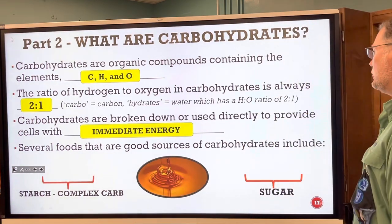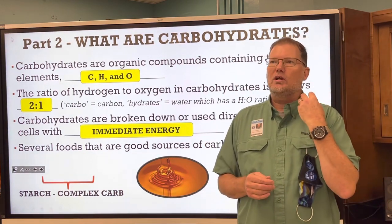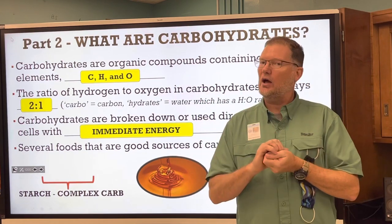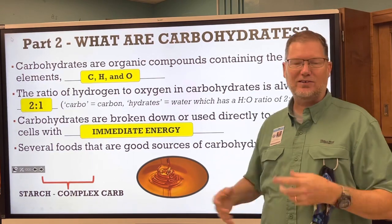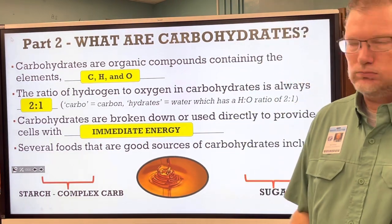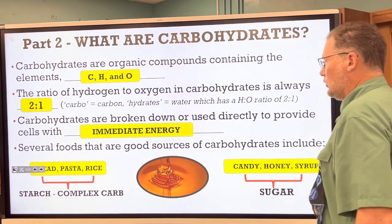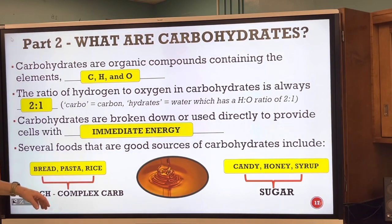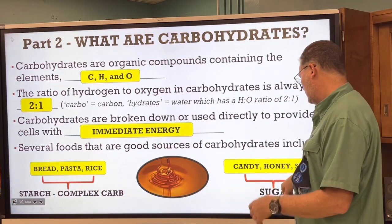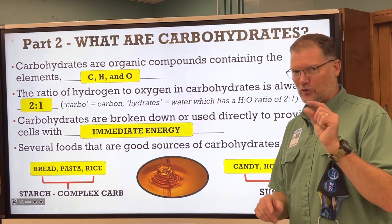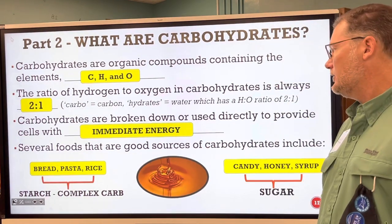Carbohydrates are broken down or used directly to provide cells with immediate energy. If your body needs immediate energy, you eat carbs. Proteins and fats take a lot more time to break down and require more energy — carbs are the fastest. That's why when you have sugar you feel energetic, but if you eat turkey you feel like sleeping. Good sources include bread, pasta, and rice — those are complex carbs, which you should eat. Candy, honey, and syrup are simple carbs and virtually pure sugar — keep those low in your diet.